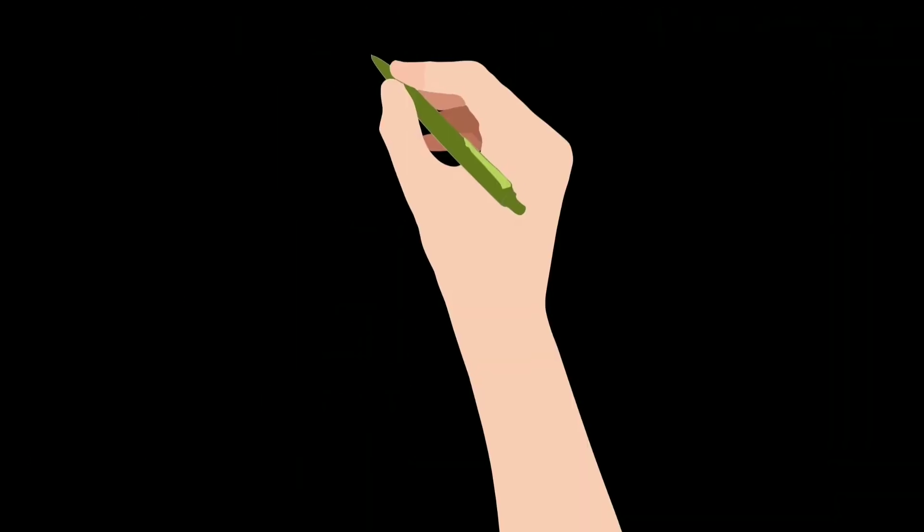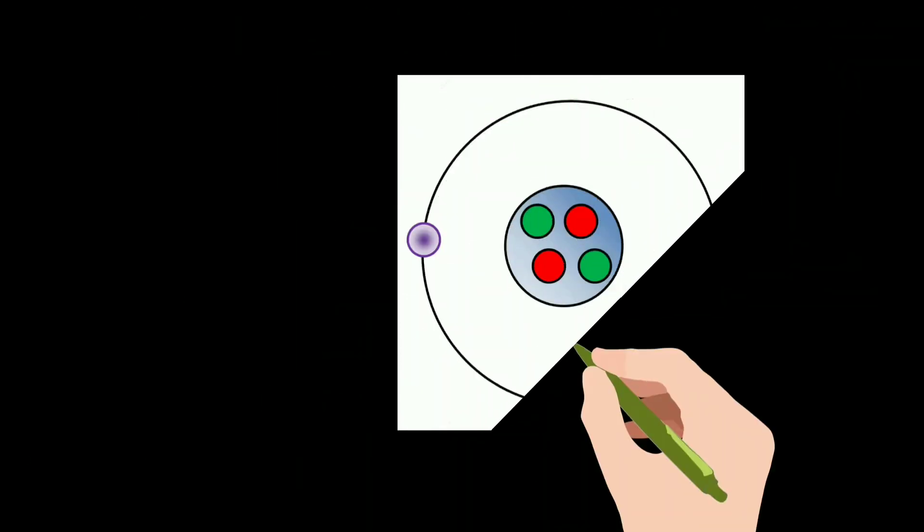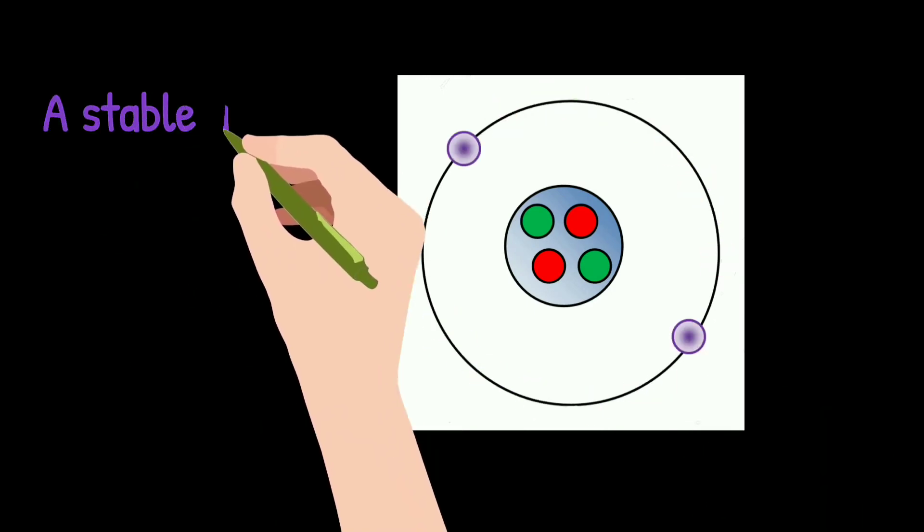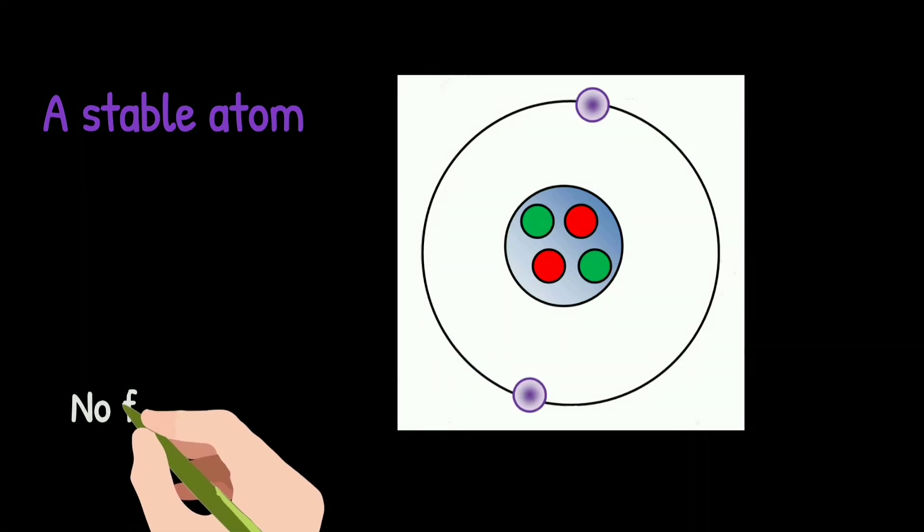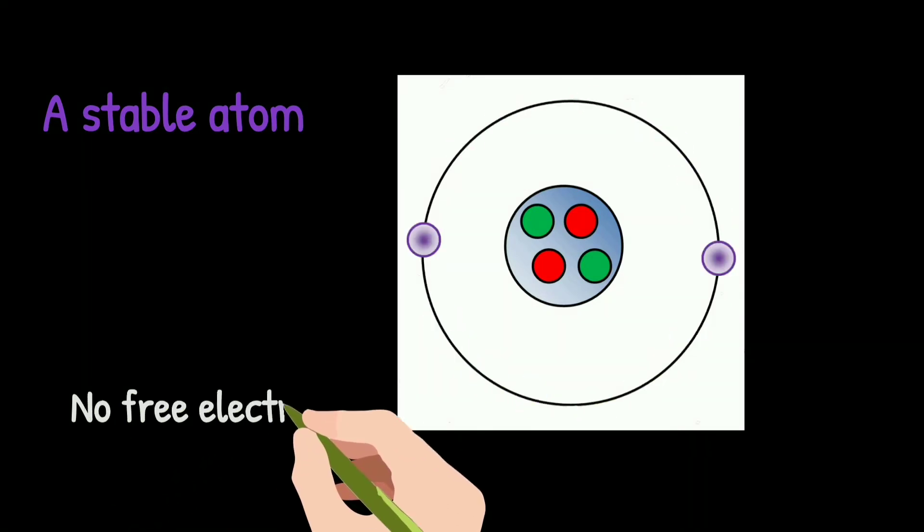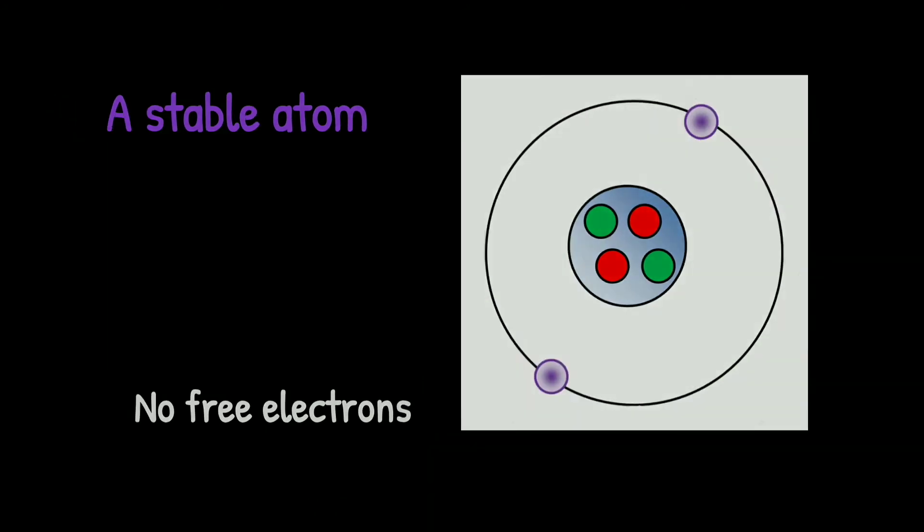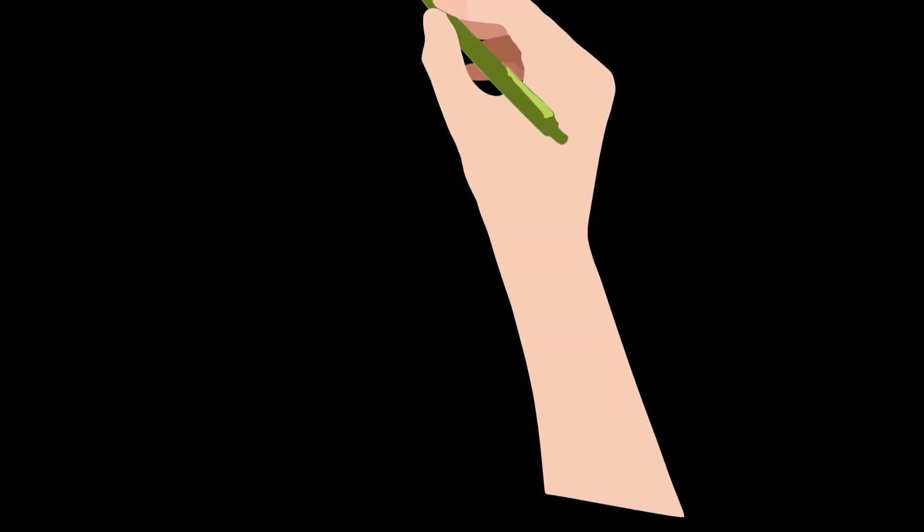Let us consider the Bohr's atomic model. This atom is a stable atom as number of electrons are equal to the number of protons, that is, it does not possess free electrons. Now let us see properties of these charges.